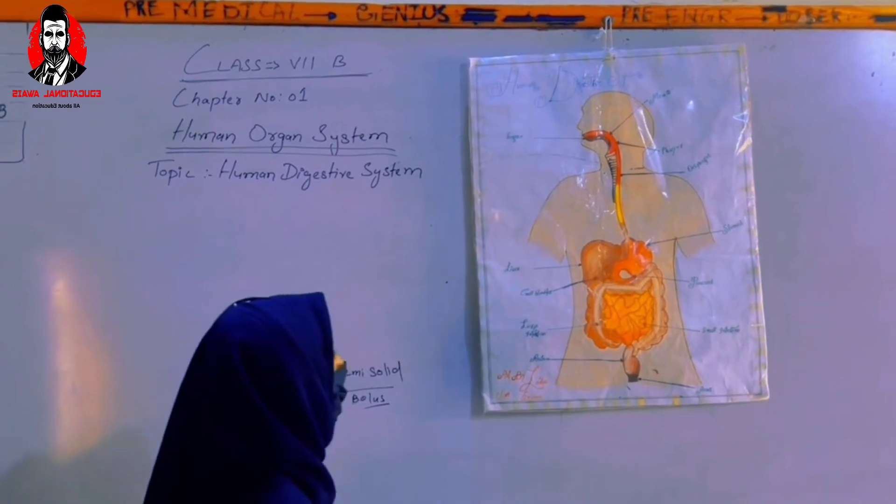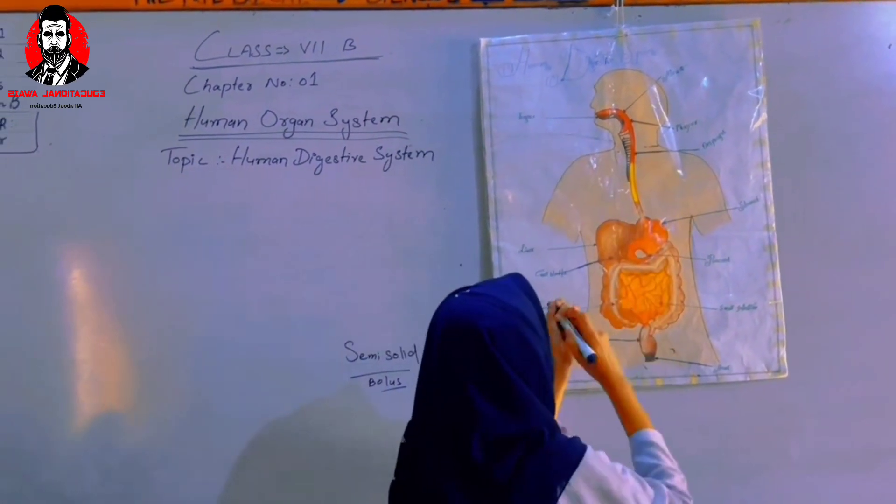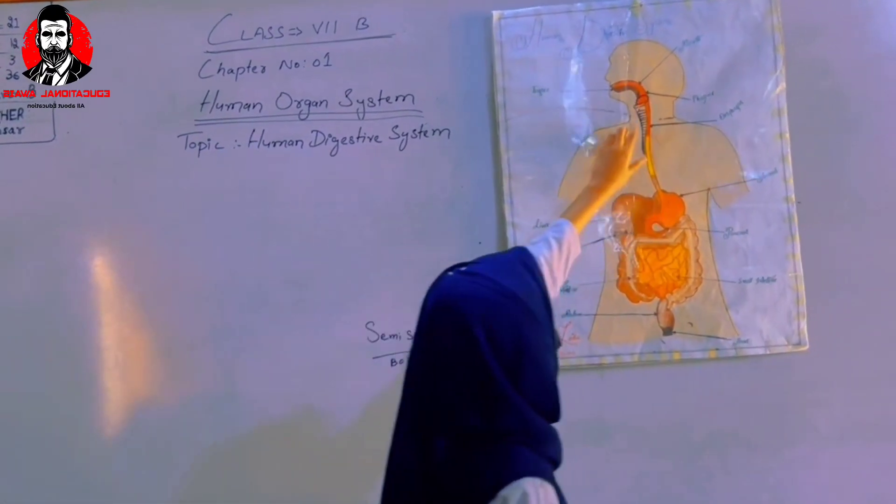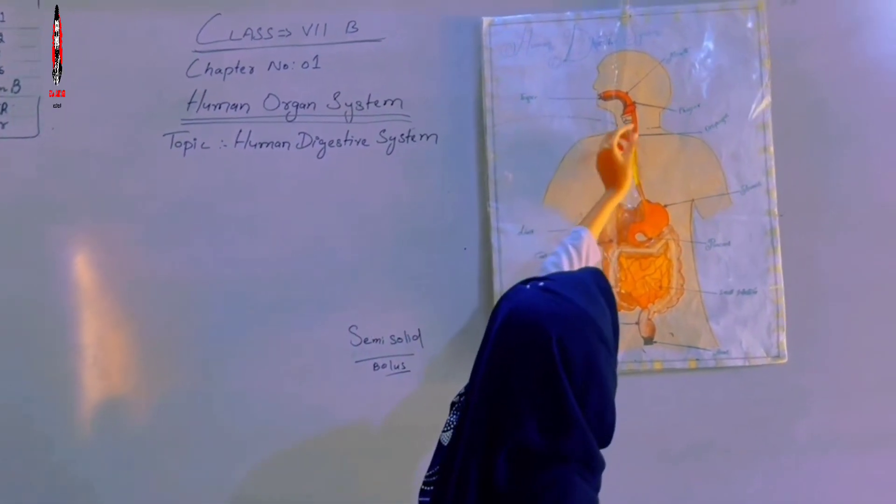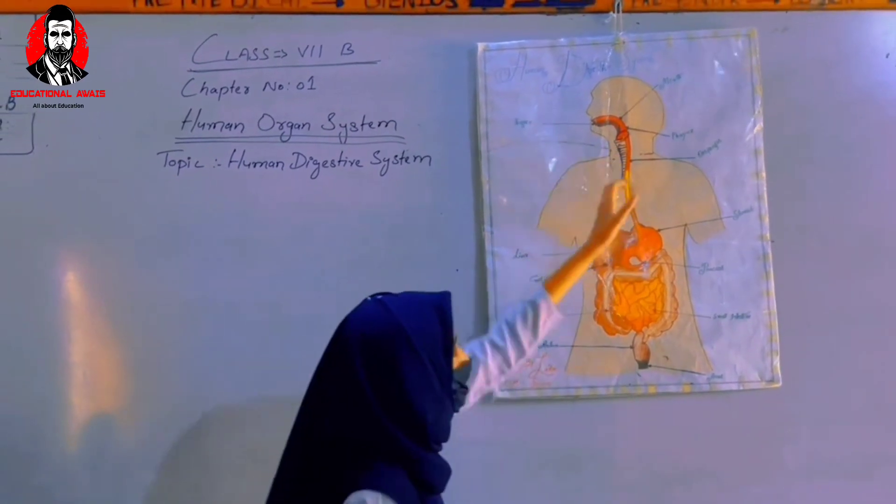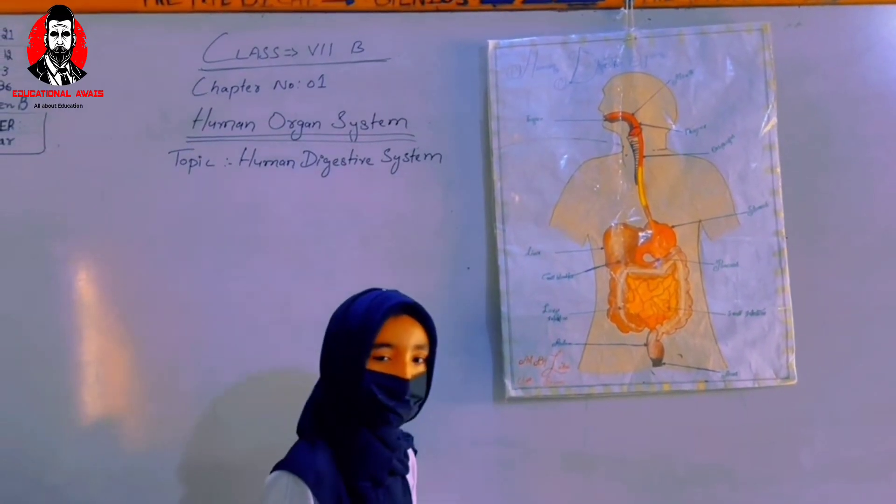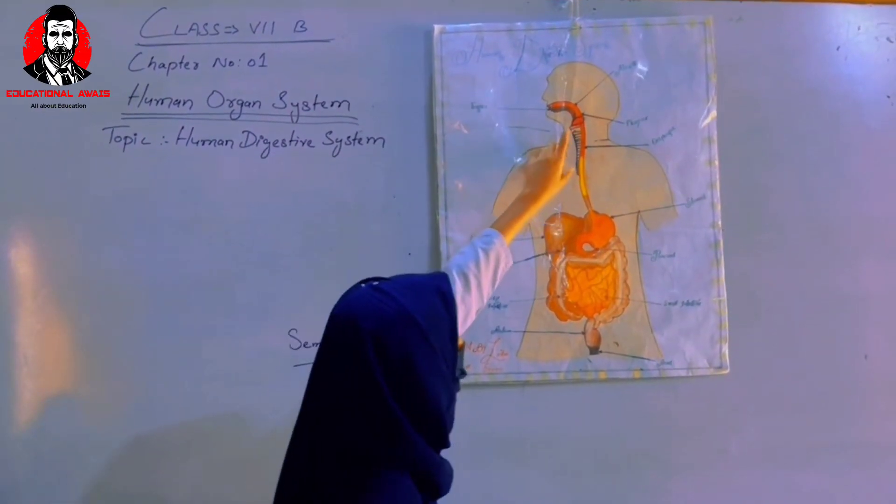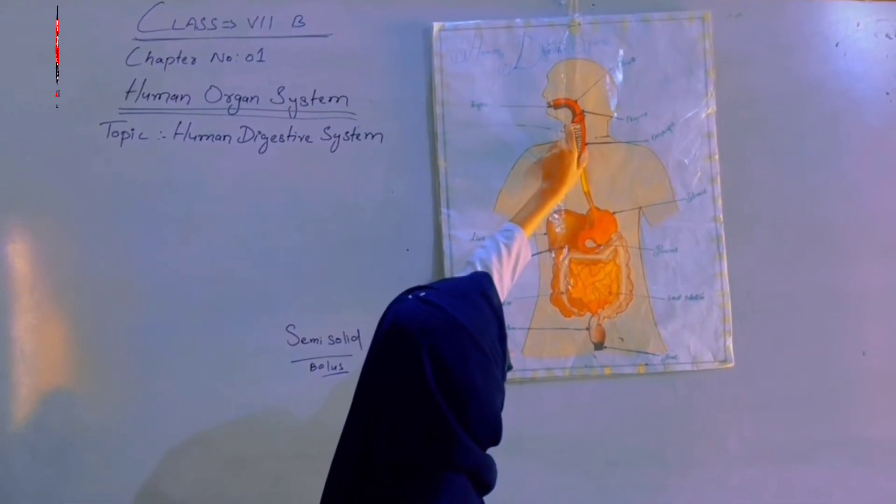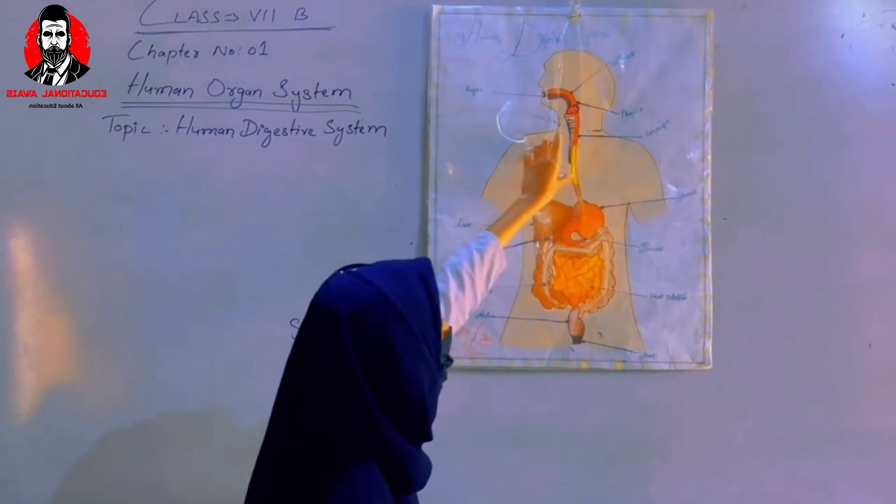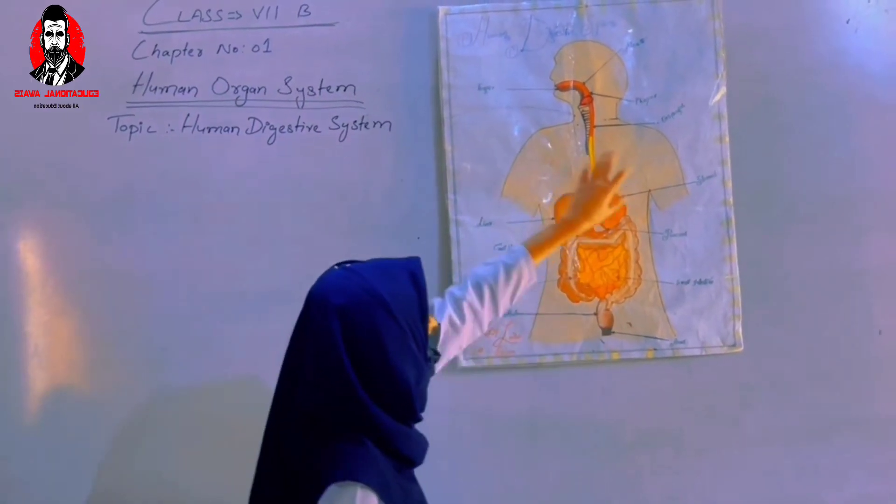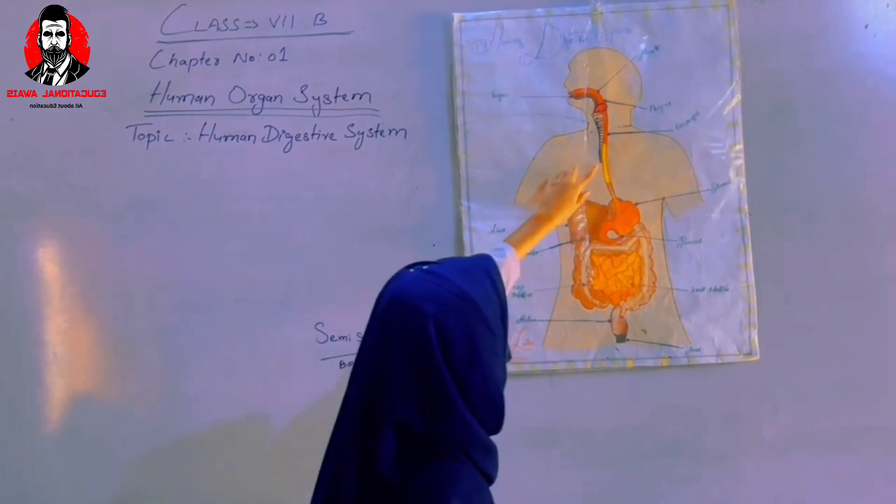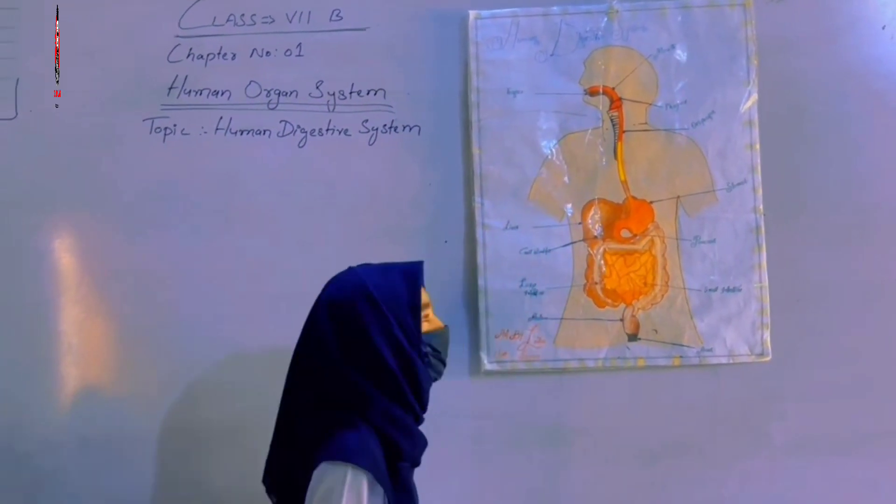The pharynx and larynx have an epiglottis. When we are eating, the epiglottis closes so that water or food goes to the pharynx.